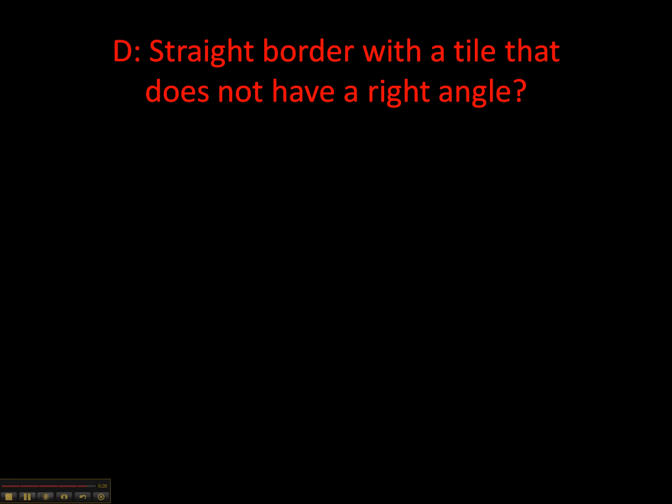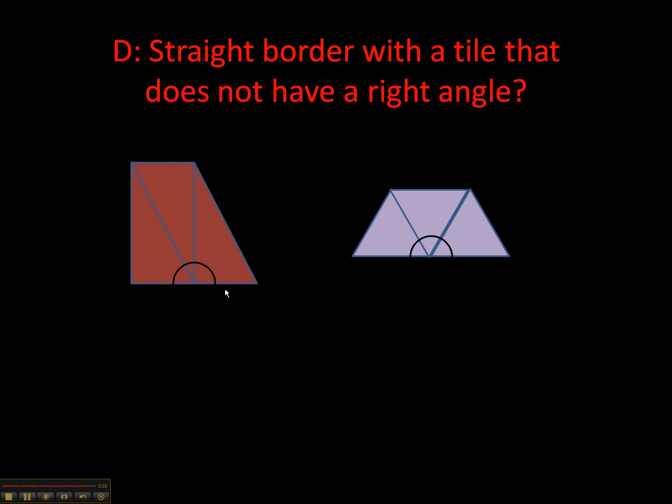D is when you have a straight border with a triangle tile, is it possible that you can do this with a tile without a right angle? And the answer is yes. We showed you in this one here with the isosceles triangle that it doesn't have a right angle on it at all. It works really well. And what you're doing here is you're actually measuring all of the angles of all of the triangles, each angle in each one of the triangles.